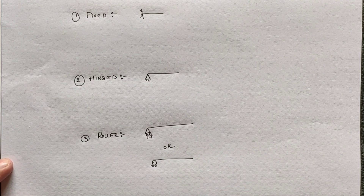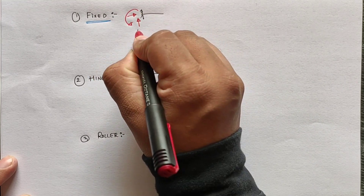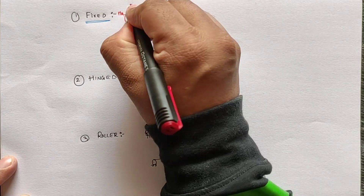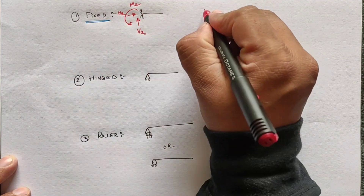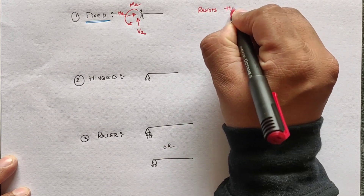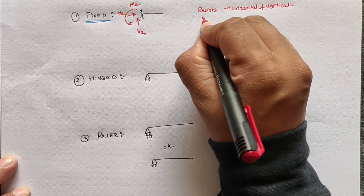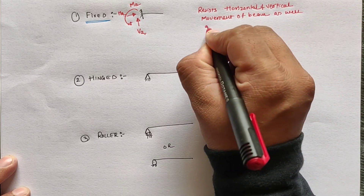When a beam is loaded, due to the support, some reactions are exerted at the location of support. For the fixed support, there are a total of three reactions, which are vertical, horizontal, and moment — indicated as vertical reaction at A, horizontal reaction at A, and moment at A.